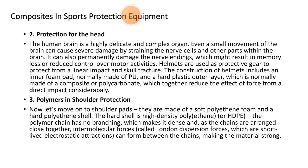The second area is protective equipment for the head. The human brain is a highly delicate and complex organ. Even a small movement of the brain can cause several damages by straining nerve cells. It can permanently damage nerve endings, which might result in memory loss or reduced motor activity control. Helmets are used as protective gear to protect against linear impact and skull fracture. The construction of a helmet includes an inner foam pad normally made of polyurethane and a hard plastic outer layer normally made of composite polycarbonate, which together considerably reduce the effect of direct impact.